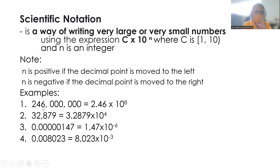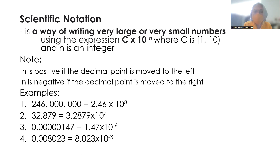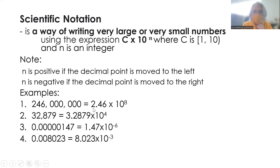For example, we have 246 million. Note that the decimal point is at the end of this zero, so we will have to move the decimal point — 8 times to the left. So mula sa number na ito, mamimili tayo ng value ng c. Hindi pwedeng 0.246 kasi dapat greater than or equal to 1. Hindi rin pwedeng 24.6 kasi mag-violation ng interval notation rule natin. So ang correct value ng c ay 2.46. And since the decimal point has been moved to the left, it's positive 8. So the value of n is positive 8, and we now have 2.46 times 10 to the 8.